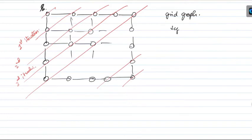Suppose the sequential algorithm does work of W. How much parallelism can I achieve using this? In the best case, what is the kind of parallelism I can achieve? I need to tell you how the processes are distributed — how do we distribute this amongst the processes?